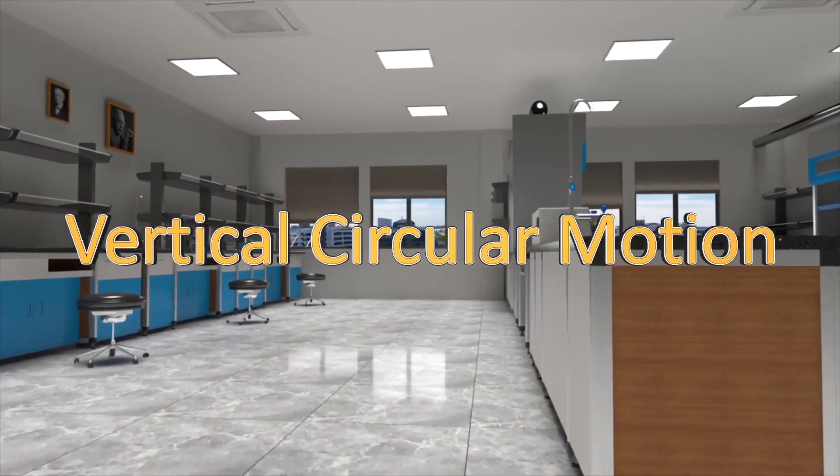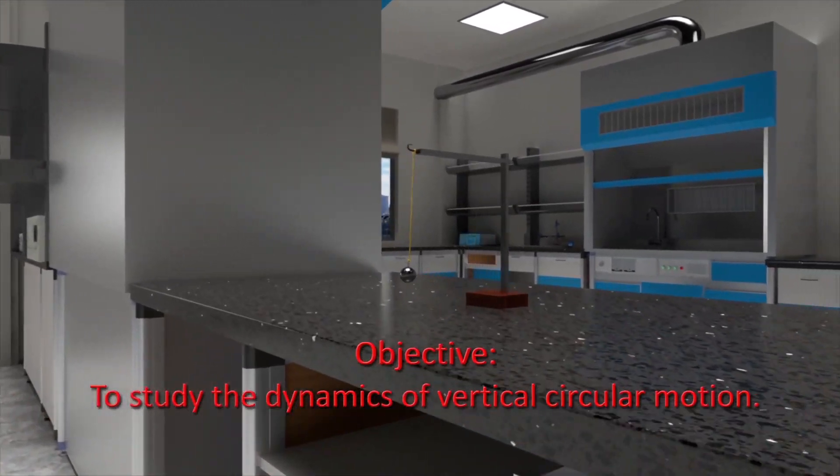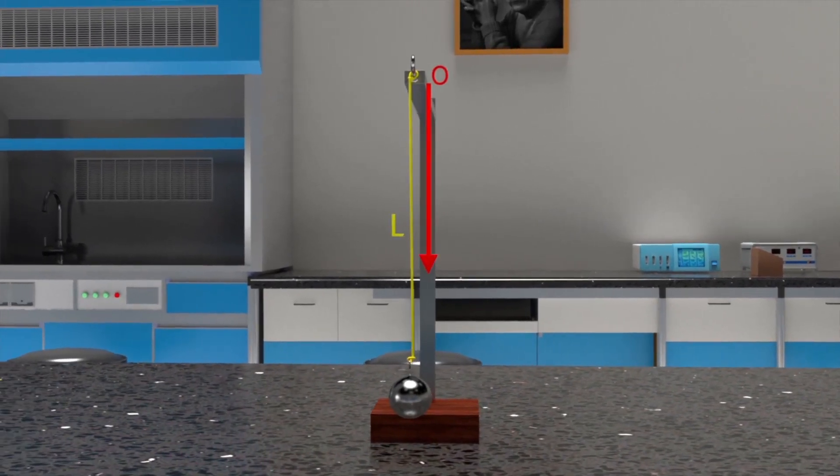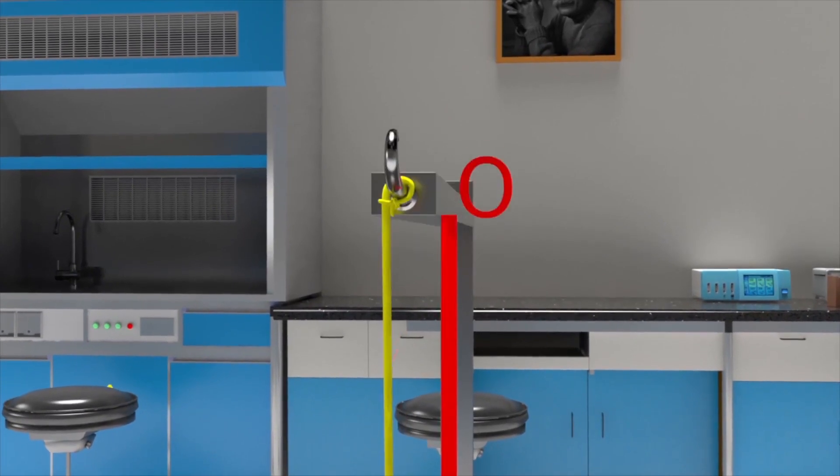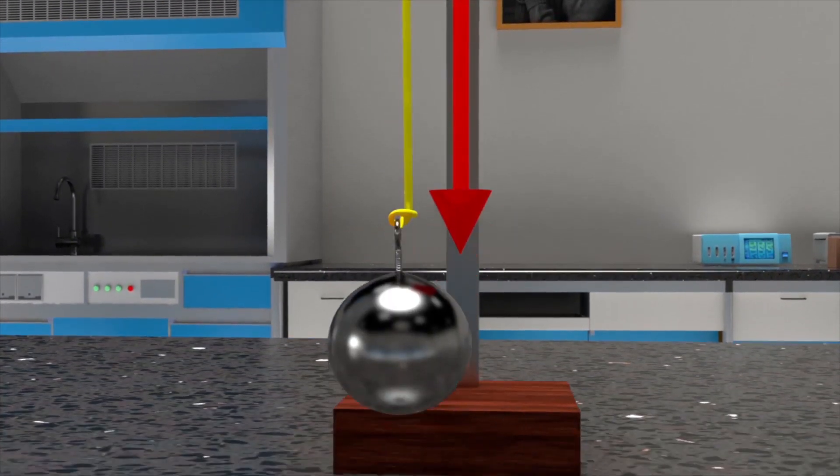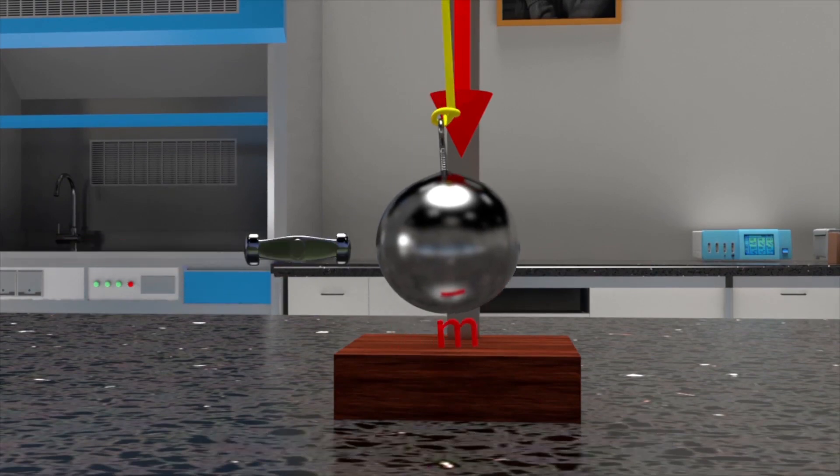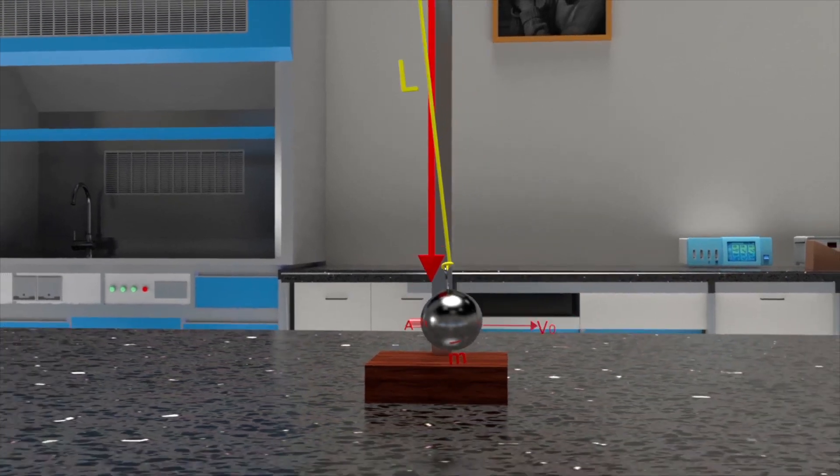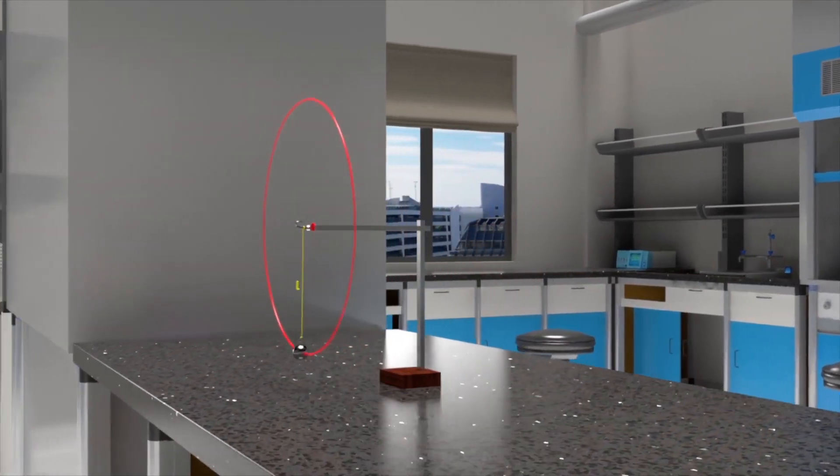Vertical circular motion. Objective: to study the dynamics of vertical circular motion. One end of a massless inextensible string of length L is fixed to a fixed point O, and its other end is tied to a very small bob of mass M. The bob is given a sudden push at the lowest point A in the horizontal direction, so that its velocity is V not at A. The bob takes a circular path of radius L in the vertical plane.